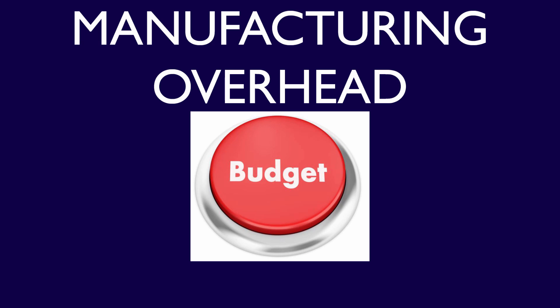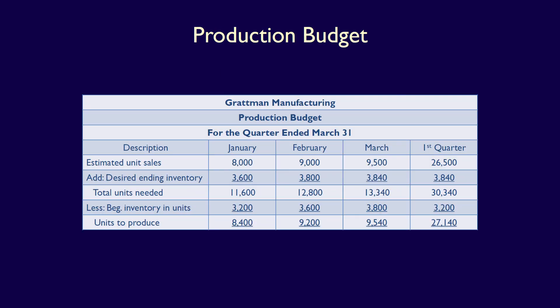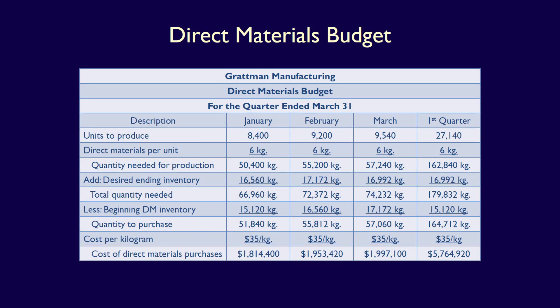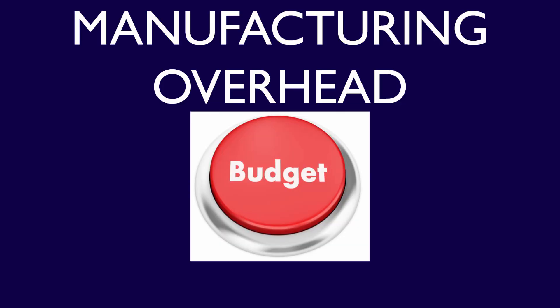We're continuing the master budgeting process and preparing a manufacturing overhead budget. We have already completed four of Gratman Manufacturing's operating budgets in our previous videos – the sales budget, production budget, direct materials budget, and the direct labour budget. We're now going to produce the next operating budget in the master budgeting process – the manufacturing overhead budget.